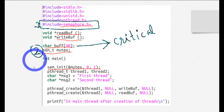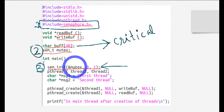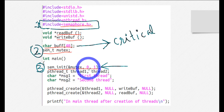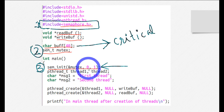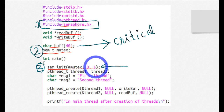Step three is to initialize the semaphore variable. The first parameter is the address of the semaphore variable, which is mutex, so we write address of mutex. The second parameter is pshared, which is zero when synchronization is done between threads. The last parameter is the initial value of the semaphore, which is always one.